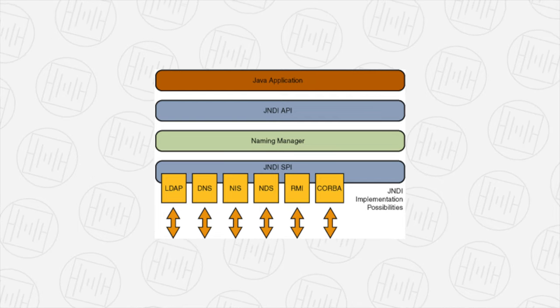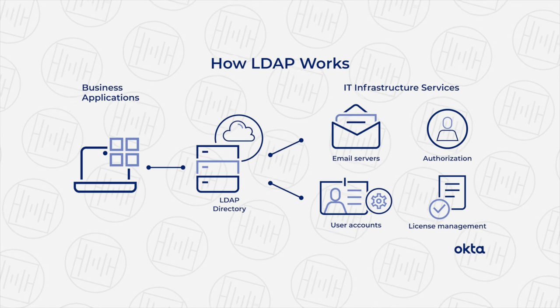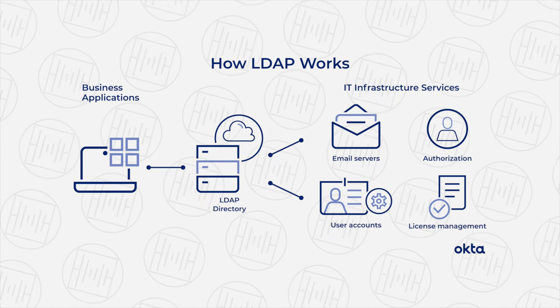LDAP is the Lightweight Directory Access Protocol — a type of protocol that allows you to access information over a network. JNDI can use LDAP to fetch information, and JNDI calls are very common in Java applications. It's important to understand that JNDI and log4j are different things: JNDI is a Java feature, while log4j is just a logging library for Java applications.